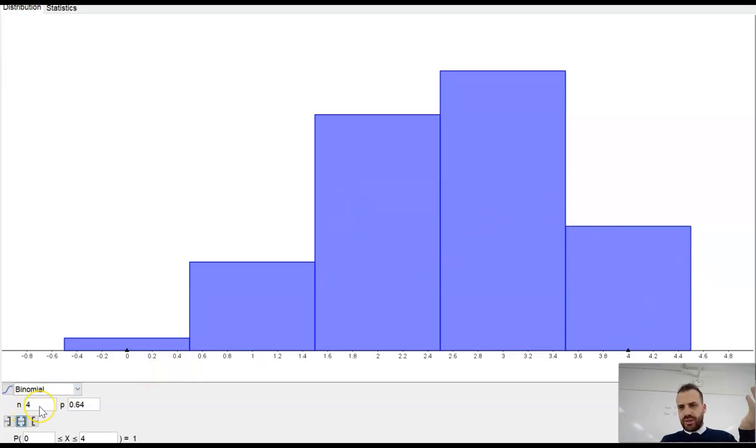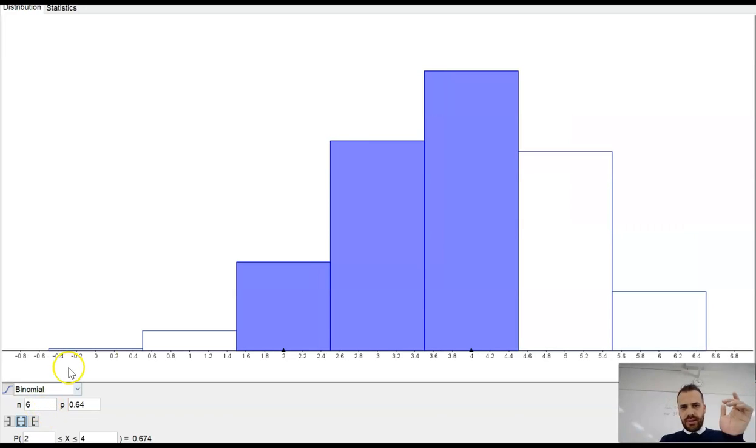Now I'm just going to increase the number of trials here from four to, say, six. And you can see here, I'll just colour them in. You can see it's starting to look a little more curvy.